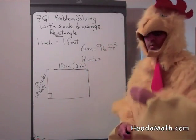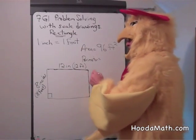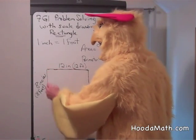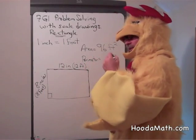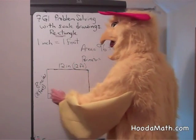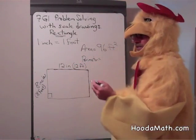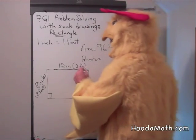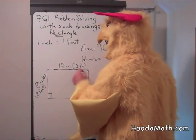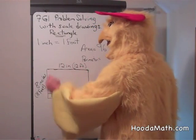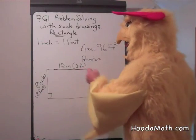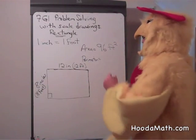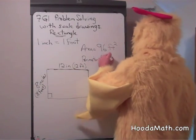The perimeter would be the distance around this rectangle, 12 inches by 8 inches, but that is what this drawing is. It symbolizes a much larger rectangle, which is 12 feet by 8 feet. So, half the distance around would be 12 plus 8, which is 20, times 2, would give you 40 feet.